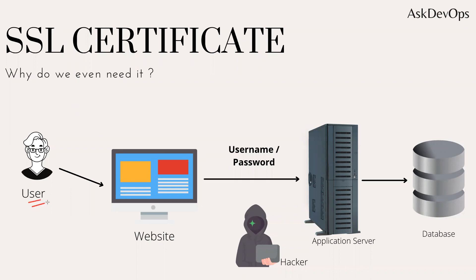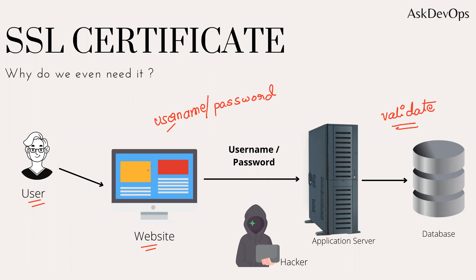Let us take an example. Let's say we have a user and this user is using a website. If this user wants to use this website, he might be asked to log in — he might be requested to share his username and password. When he enters this username and password, what actually happens? This goes to our application server, then goes to our database. It validates the username and password, and then the end user will be able to access the website. This is the standard process.